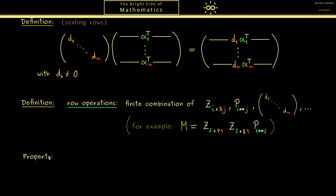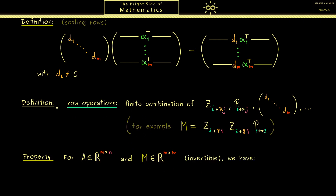Let's note the important property of row operations. For any matrix A with M rows and N columns, we can multiply it with an invertible square matrix M from the left — this includes all row operations. The kernel does not change at all: the kernel of M times A is the same as the kernel of A. So you can remember: row operations don't change the kernel.